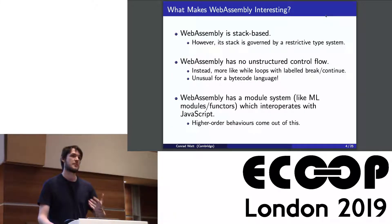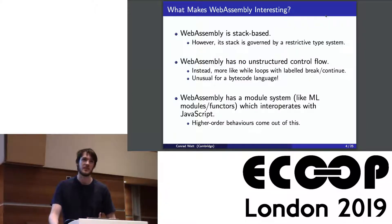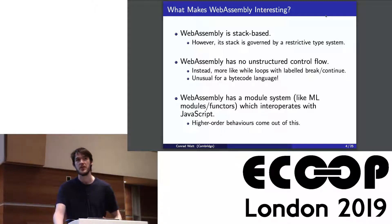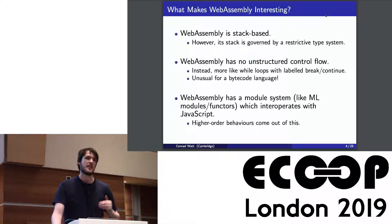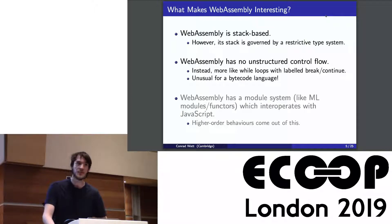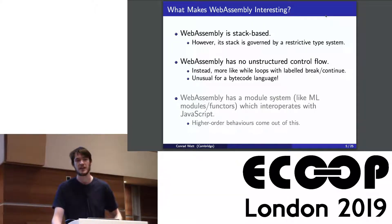In terms of the specific properties of WebAssembly and what that means for any program logic reasoning about it: WebAssembly is stack-based, but it comes with a type system that means you can predict and guarantee a lot of the behaviors of the stack, so reasoning about the stack becomes quite simple. Unlike the Java bytecode, WebAssembly doesn't have unstructured control flow — instead it has loop and block opcodes. WebAssembly also has a module system which interoperates with JavaScript, with lots of strange higher-order behaviors. For this work, we're just going to look at the first two, creating a nice envelope where we capture WebAssembly's stack behavior and control flow correctly, leaving higher-order JavaScript interop for future work.